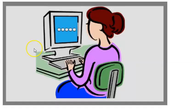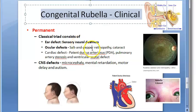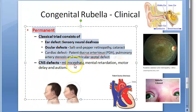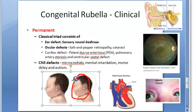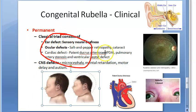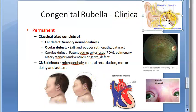Now let's look at the clinical features of Congenital Rubella Syndrome. CNS involvement includes microcephaly, mental retardation, motor delay, and autism — all permanent damage. There is also a classical triad consisting of ear defects, ocular defects, and cardiac defects.